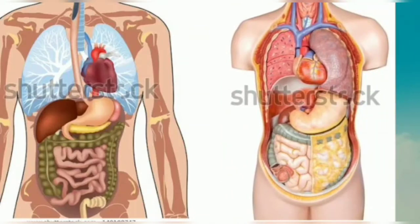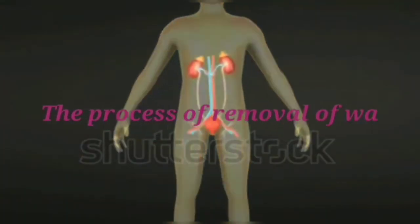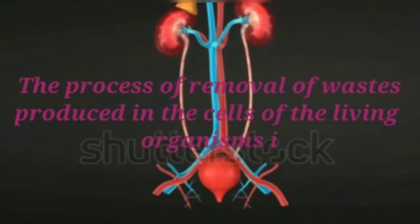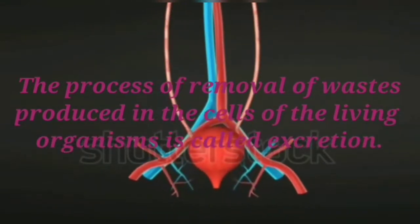When our cells perform their functions, certain waste products are released. These are toxic and hence need to be removed from the body. The process of removal of waste produced in the cells of living organisms is called excretion.